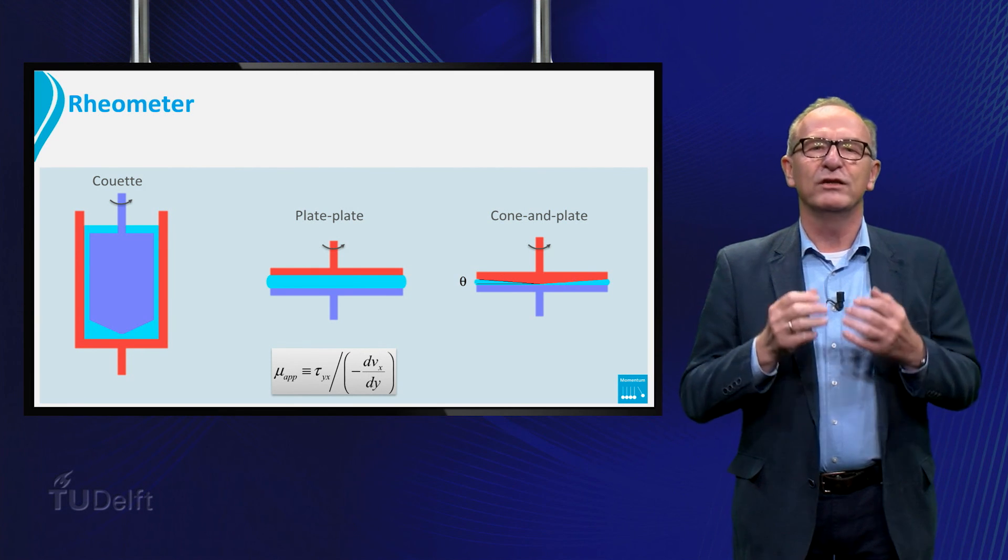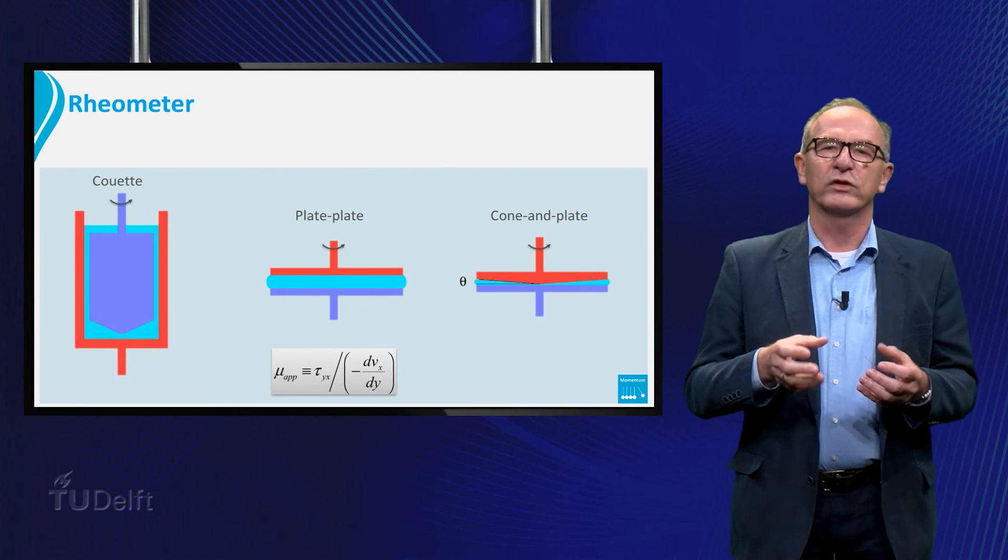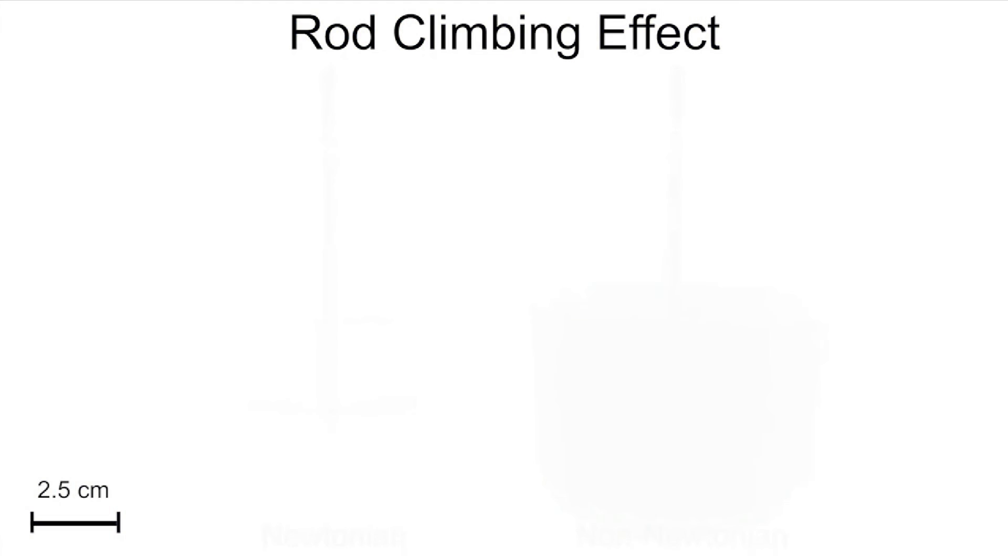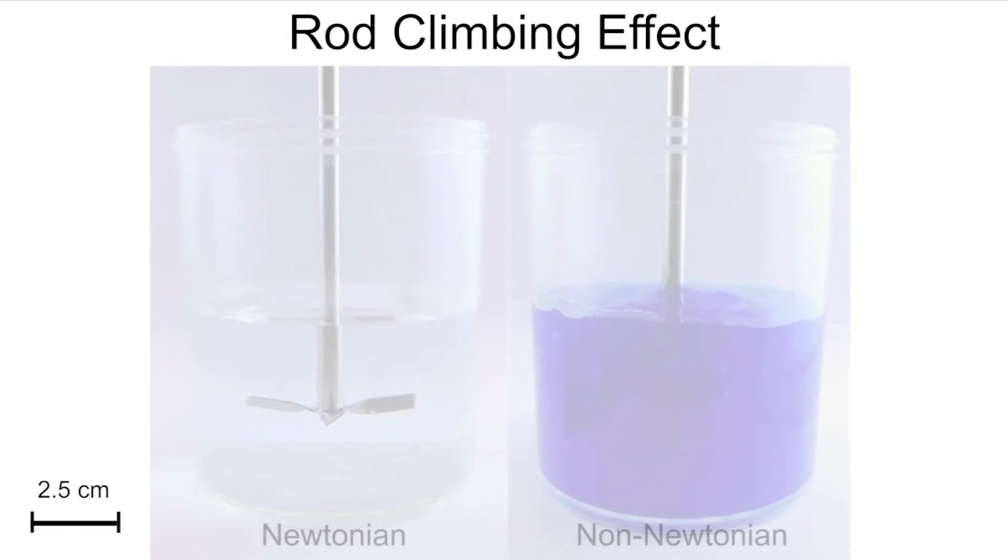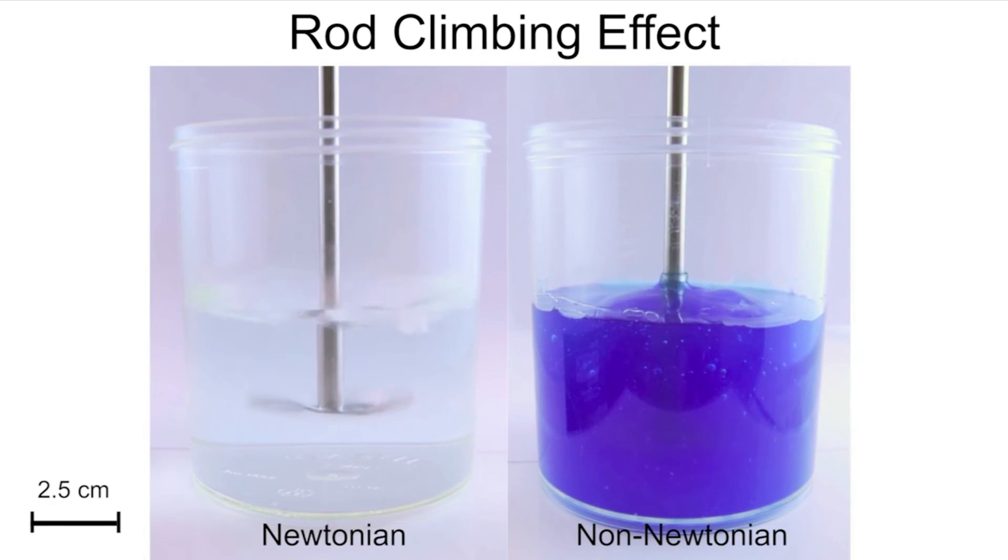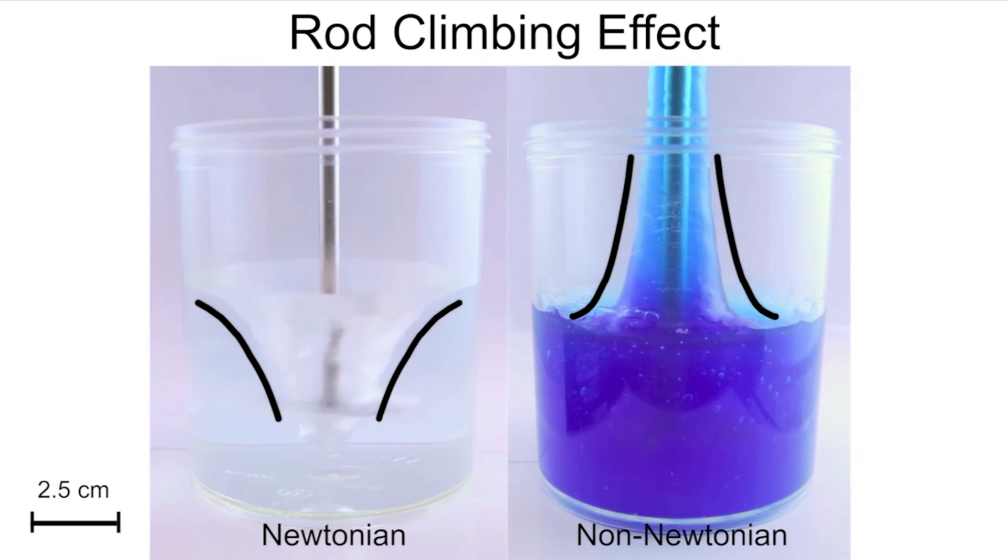First you see a stirrer in a Newtonian fluid resulting in a vortex in the fluid, and secondly a non-Newtonian viscoelastic fluid which shows not a vortex but the contrary, the fluid climbs upwards along the stirrer as a result of the elastic force in the direction of the stirrer.